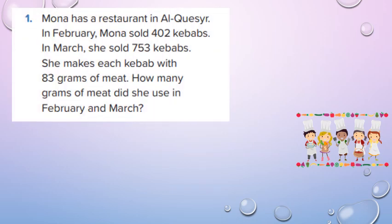Exercise 1. Mona has a restaurant in El Qusari. In February, Mona sold 402 kebabs. In March, she sold 753 kebabs. She makes each kebab with 83 grams of meat. How many grams of meat did she use in February and March?